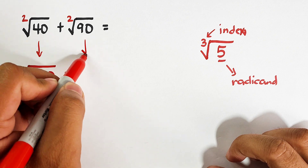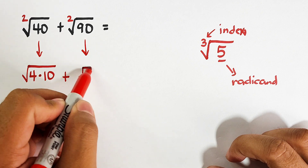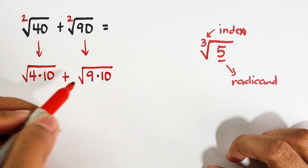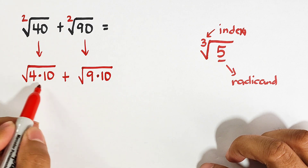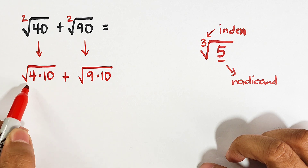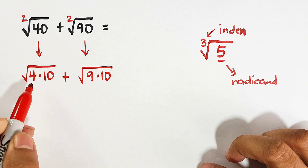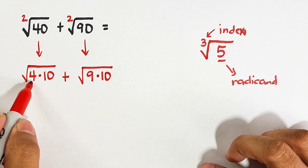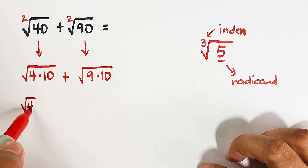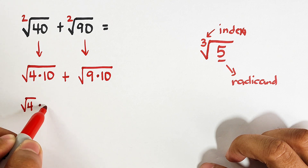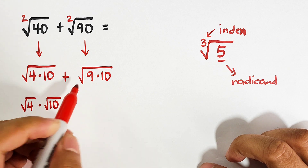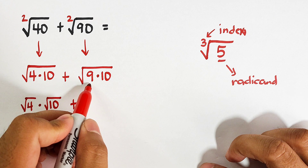We can factor the square root of 40 as the square root of 4 times 10. The other radical, square root of 90, can be factored as the square root of 9 times 10. We have a property that lets us separate them: the square root of 4 times 10 can be written as the square root of 4 times the square root of 10, plus the square root of 9 times the square root of 10.